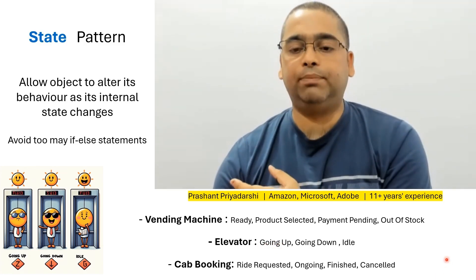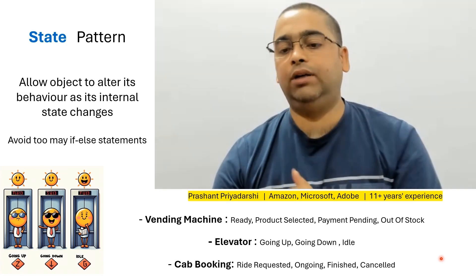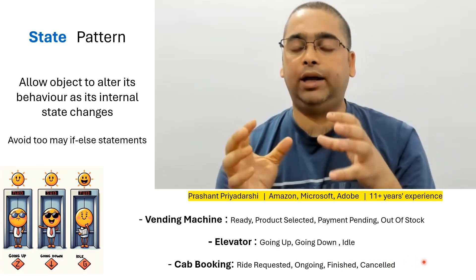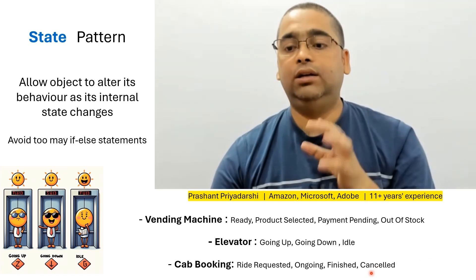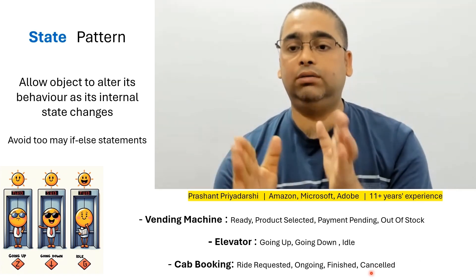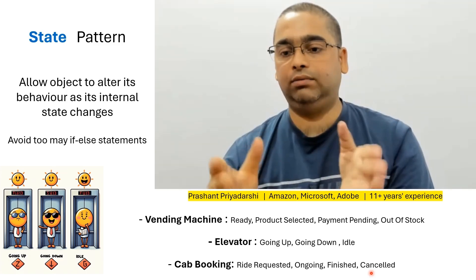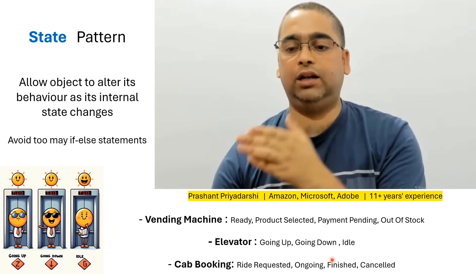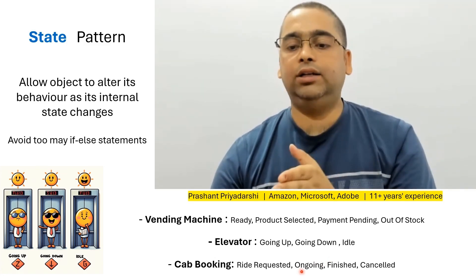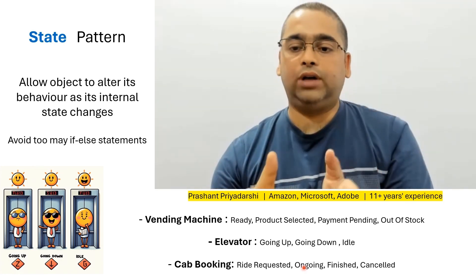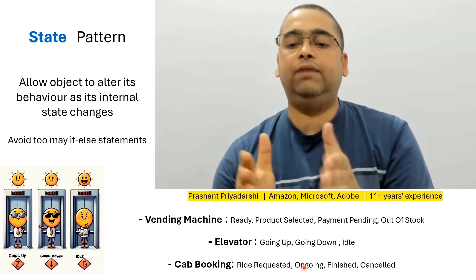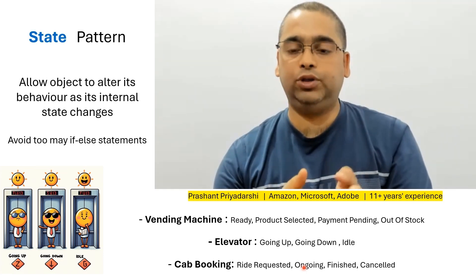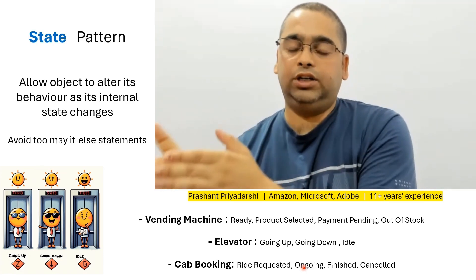Let's take a slightly different example of a cab booking system. In a cab booking system, your ride can be in different states: ride requested, ongoing, ride finished, or ride cancelled. Consider a common method like time taken to reach destination. If the ride is cancelled, it returns minus 1. If the ride is already finished, it returns 0 because the passenger has already reached their destination. If the ride is ongoing, it returns the time to travel from the user's current position to the destination. If the ride is only requested, it is the sum of time for the driver to arrive at the starting position plus time to go from starting position to destination.